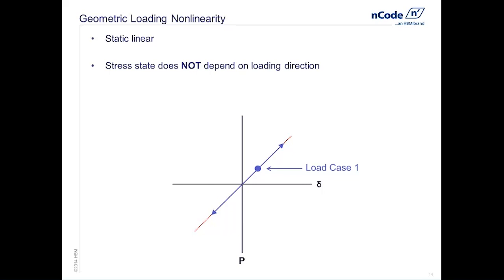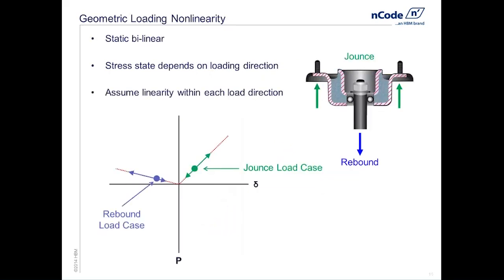In the case of the strut, simply scaling one load case is not acceptable. Instead, we perform what we call a static bilinear FEA analysis, where we solve a load case that captures the stresses due to jounce as well as a separate load case that captures the stresses due to the rebound condition. From there, it's appropriate to assume linearity in each direction. The idea is to capture those two stress states independently, so as we scale our jounce case by positive loads we'll have appropriate stresses along the green line, and as we scale our rebound case by negative loads we'll move along the purple line.